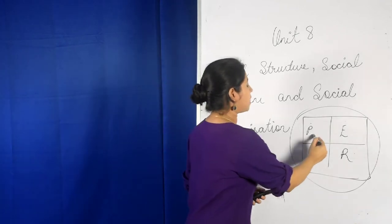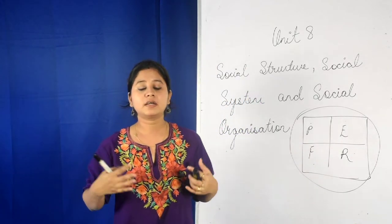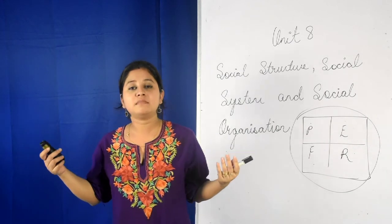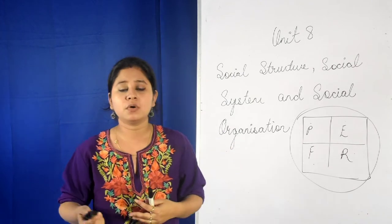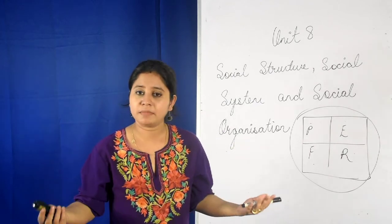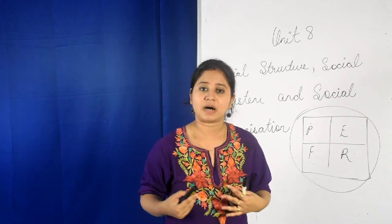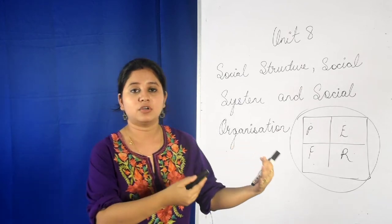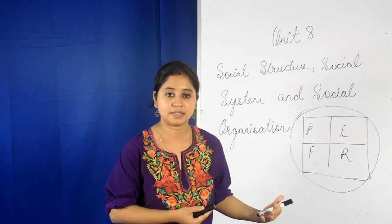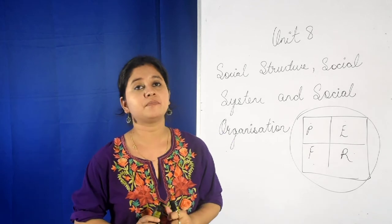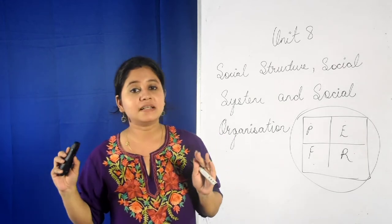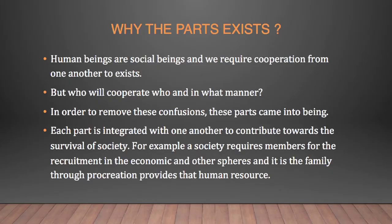Now, why do these parts exist? For example, why does economy exist in a particular society? In the animal world, to have food, we do not need any economic organization, a bank, or a marketplace. But we require a separate entity like the economy or the polity because, as we learned in the first unit, human beings are social beings and we need to cooperate with one another to exist.